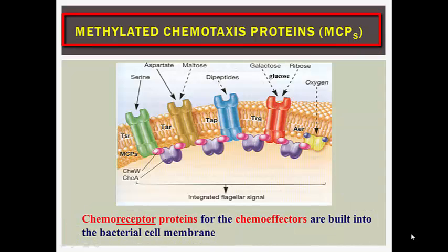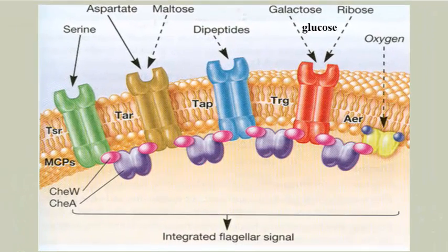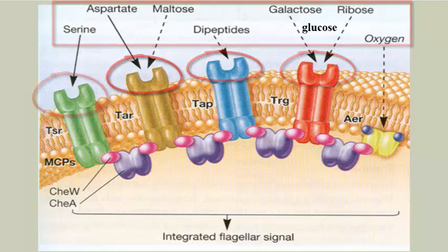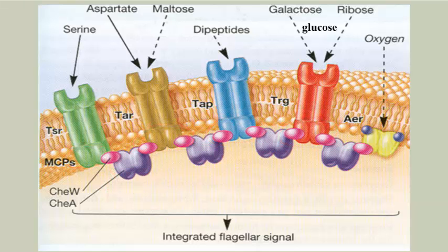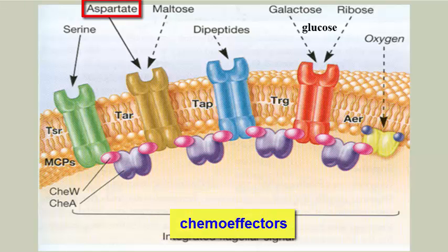Methylated chemotaxis proteins, or MCPs, are membrane proteins involved in chemotaxis. They consist of a periplasmic domain and a cytoplasmic domain. The periplasmic domain, or N-terminal region, interacts with chemoreceptors, while the cytoplasmic domain, or C-terminal region, interacts with cytoplasmic components such as CheA and CheW proteins. The C-terminal region consists of four or five glutamate residues which are methylated or demethylated as part of the adaptation response. MCPs are also called chemoreceptors; they bind to chemoeffectors such as aspartate, maltose, galactose, ribose, and oxygen.